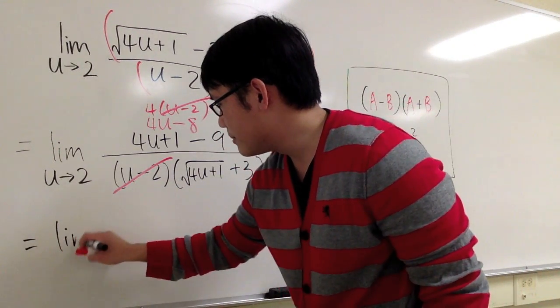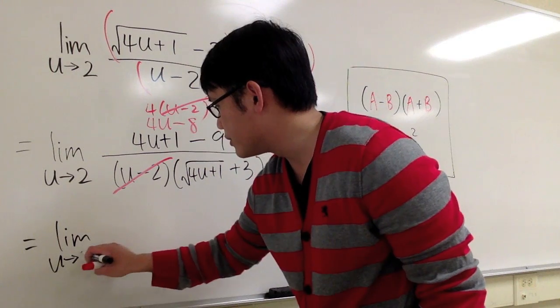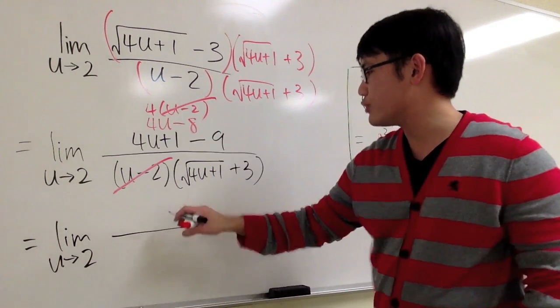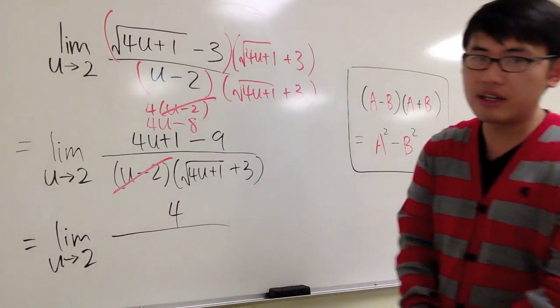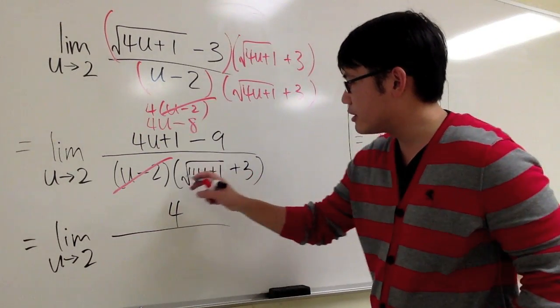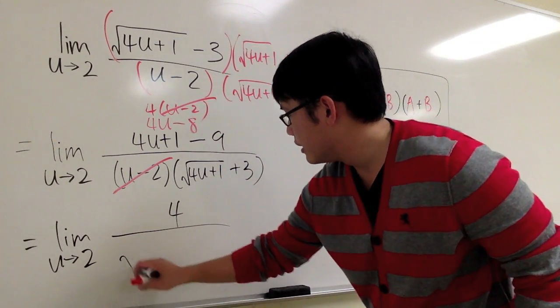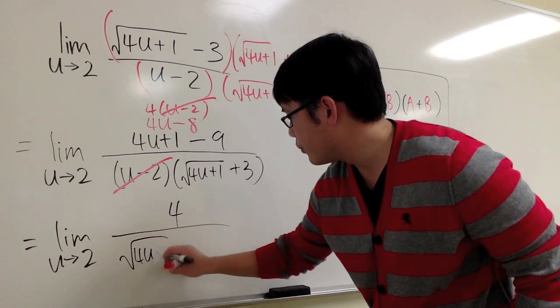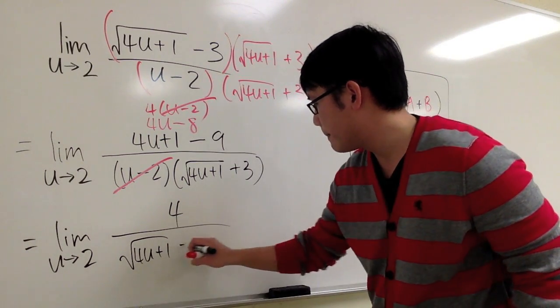So this is going to be the same as the limit when u approaches 2. On the top, I just have a 4 altogether. And on the denominator, I have this right here: square root of 4u plus 1 and then plus 3.